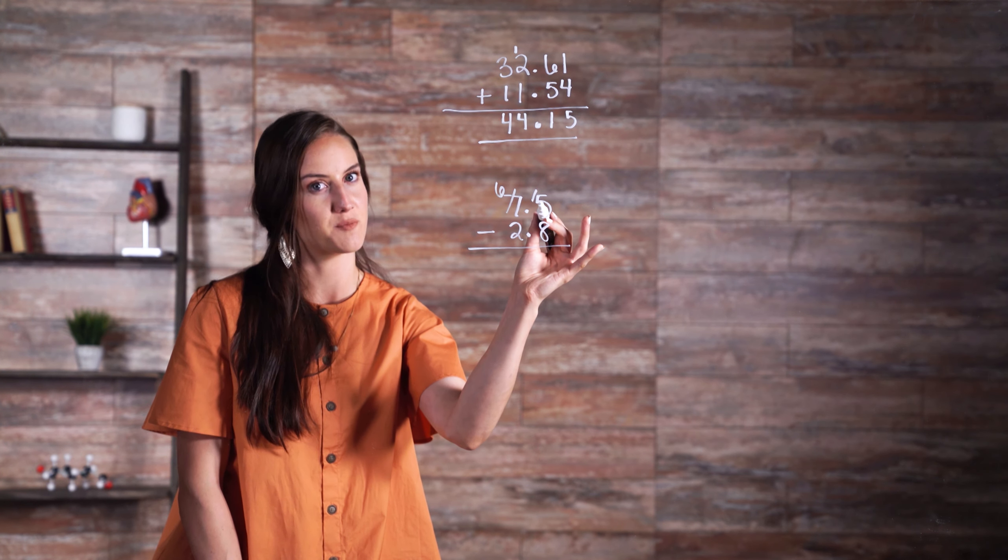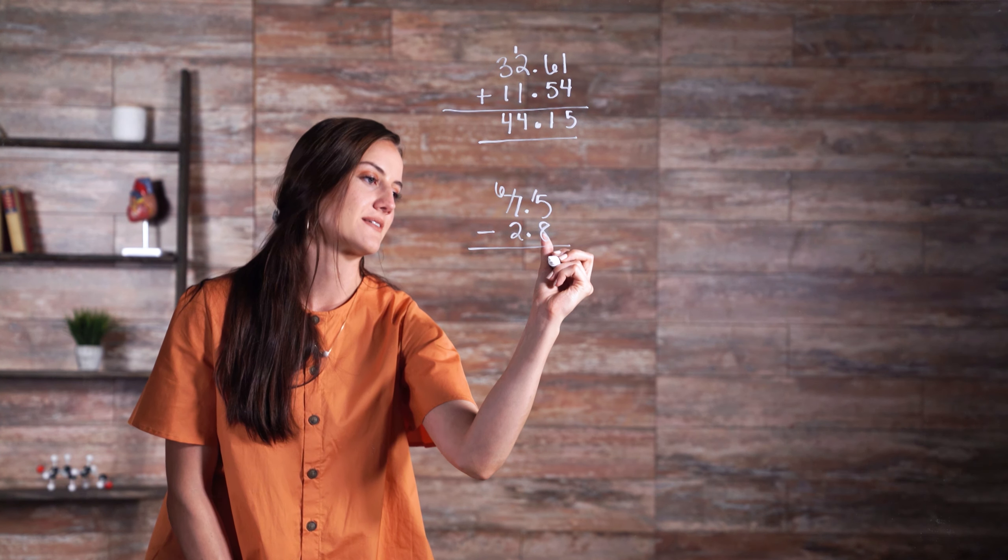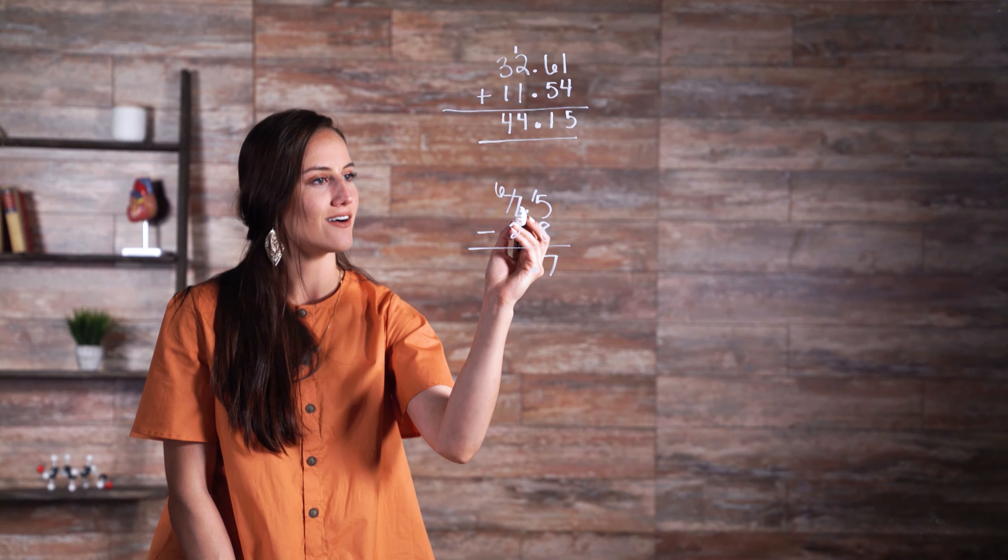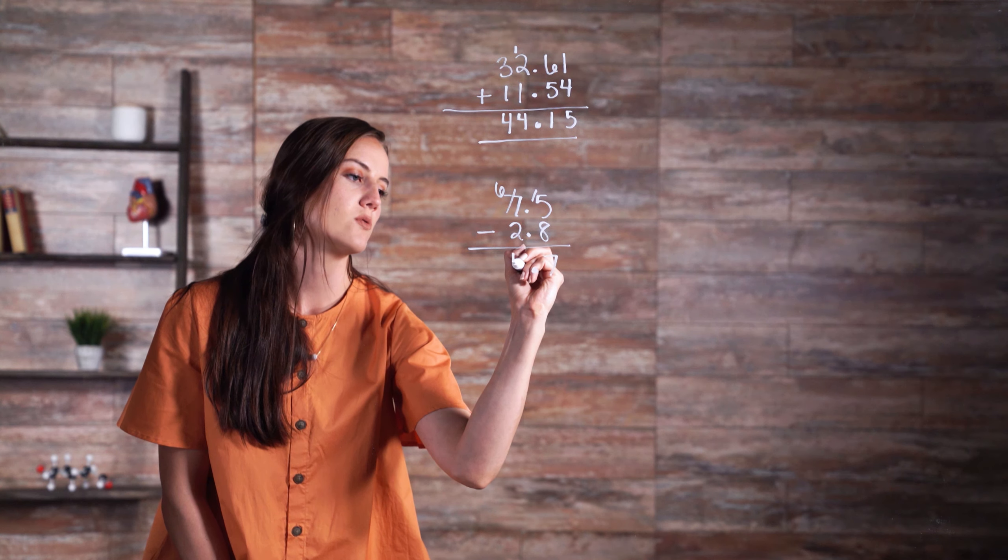So now we have 8 being subtracted from 15, which gives us 7. We bring down our decimal, and now we have 2 being subtracted from 6, which gives us 4. So our final answer is 4.7.